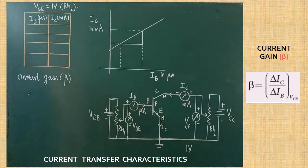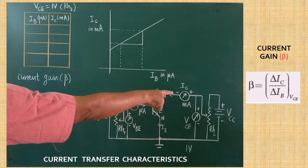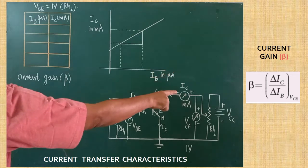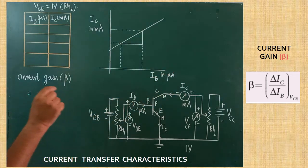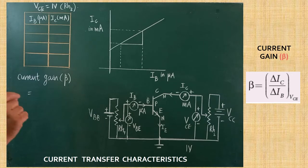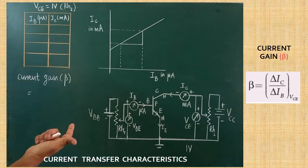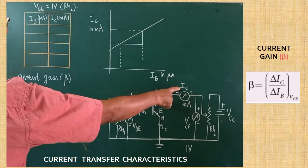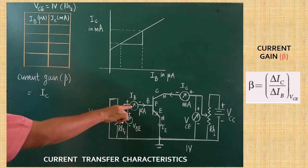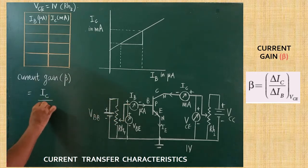Two currents are there in the circuit. One is called the input current — base current IB. The other is called the output current — collector current IC. To find out the gain of anything, we write output divided by input. Output divided by input gives you the gain — how many times it is multiplied. So here, IC is written in the numerator and the input current IB is written in the denominator.